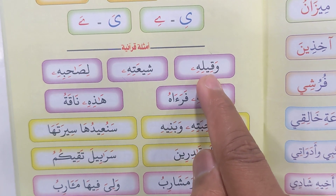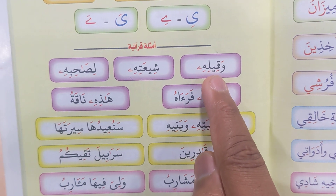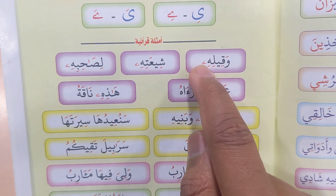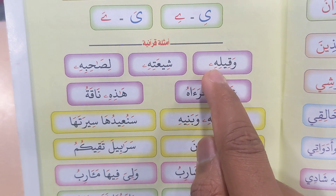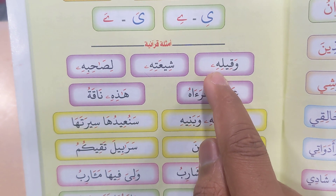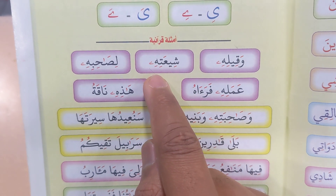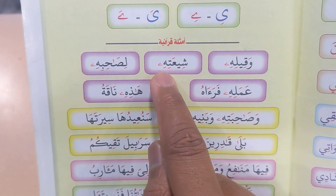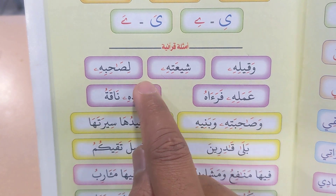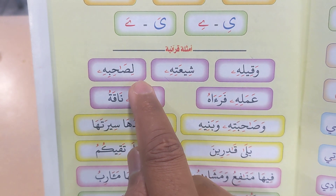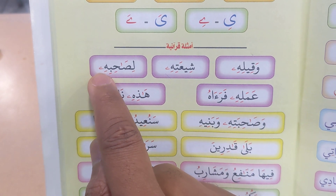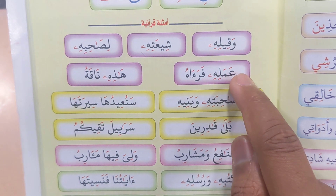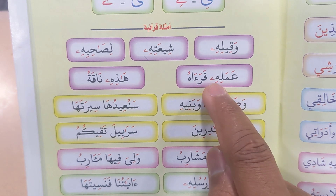Waqilihi. Fatiilihi — you see the Maddiya Sagheera at the end, in front of the round Ha. Shi'atihi — you see the Maddiya Sagheera here. Lisohibihi. Amalihi.